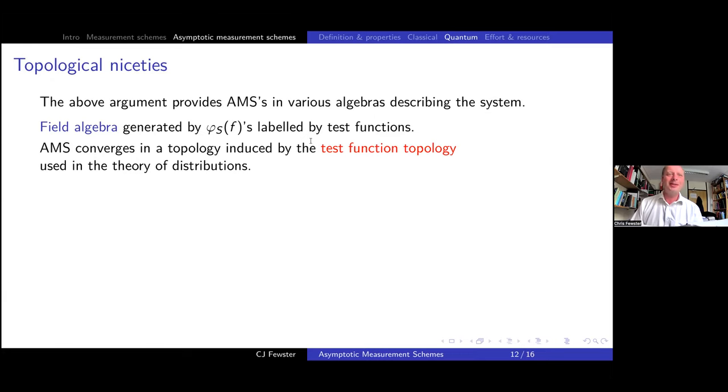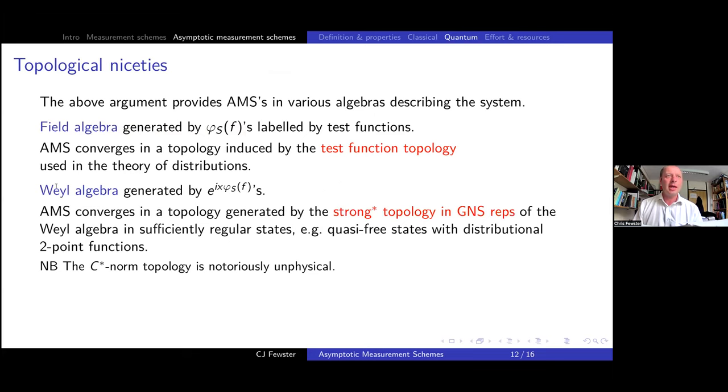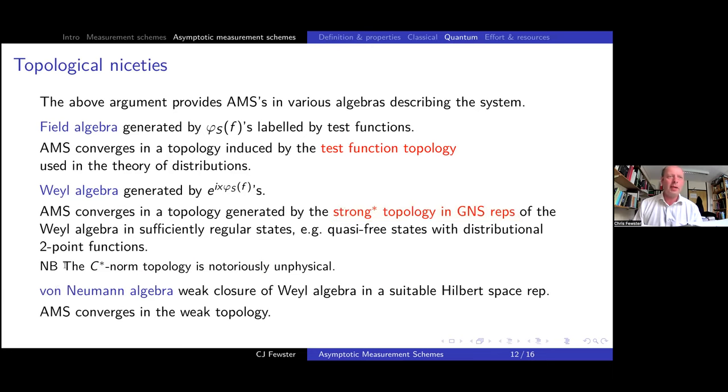So that gives us everything that we want to know about. So there is some topology. I said that there is some at the back of this. I'm not sure how much I want to detail here except to say that there are natural topologies on the field algebra and it works in that scheme. There is a natural topology on the vial algebra, which is not actually the norm topology, the C star norm topology, which is notoriously bad. But there is another one which is strong star topology in G and S representations. I know what that means or you don't. And then this asymptotic measurement scheme works in that topology. And finally, the von Neumann algebra you get by closing the vial algebra in suitable Hilbert space representations. Again, we have convergence so we can work in any three of these conventional descriptions of the free scalar field and everything comes out nicely.